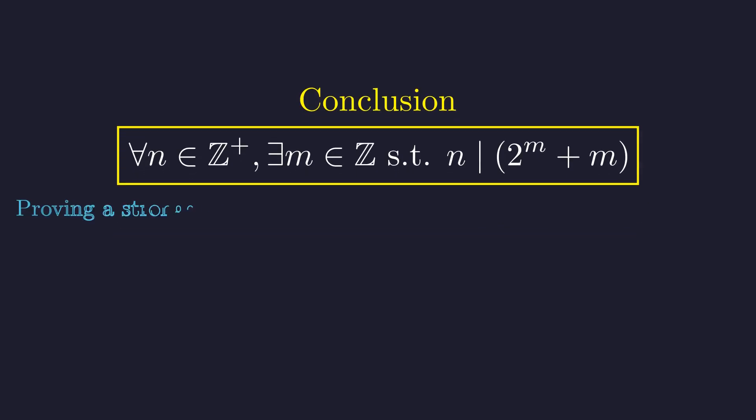So what has this exercise demonstrated? The problem initially seemed intractable. The solution was not to find m directly, but to prove a much more powerful structural result using strong induction. By adding a constraint, the variable a, we gained the flexibility needed to build the solution. This demonstrates a common theme in mathematics. Sometimes proving a harder, more general statement is the only viable path forward.